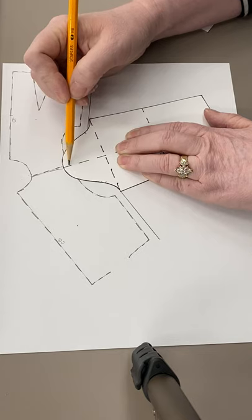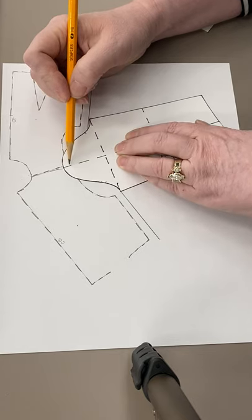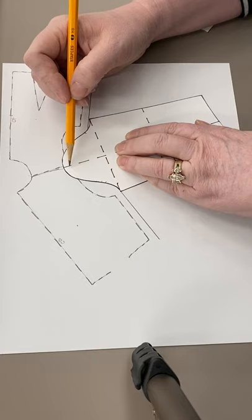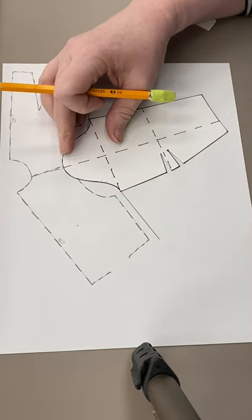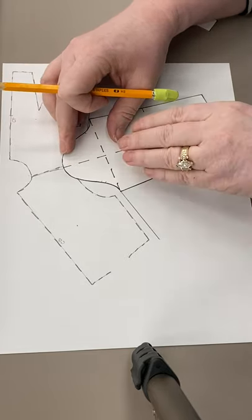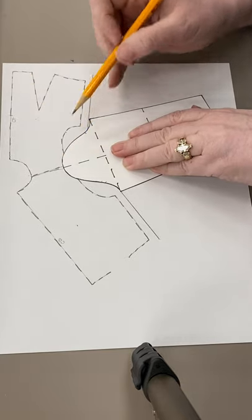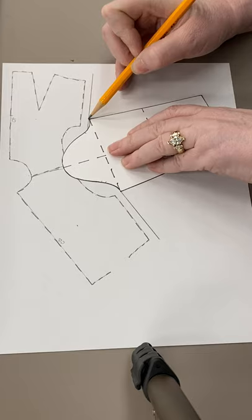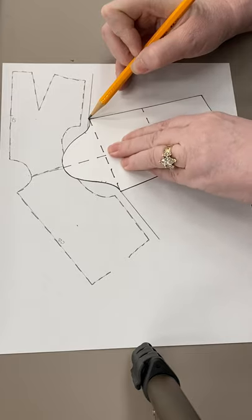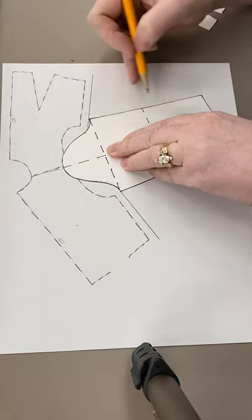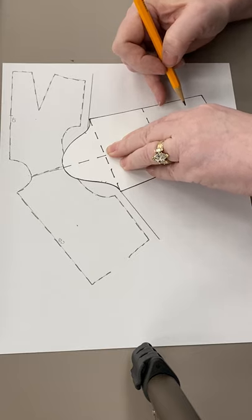It's okay if you're overlapping here. This is not as important because we're taking out the hump right here on this shoulder seam. Once you have this, this, and this in relationship to each other the best you can and as close as you can, then you're going to lightly trace the outline of your sleeve.